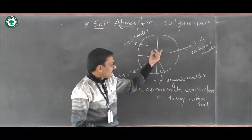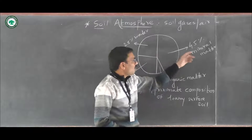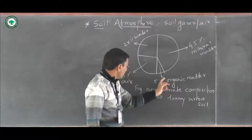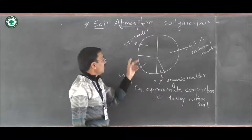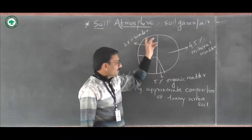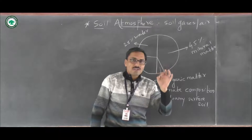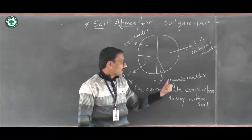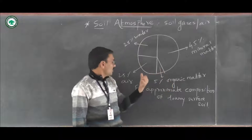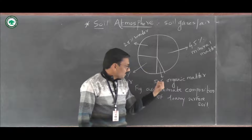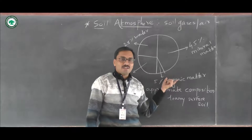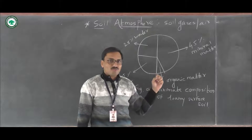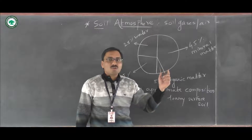This figure indicates that loamy surface soil consists of 45% mineral matter, only 5% organic matter, 25% air, and 25% water. So, the soil consists of a major proportion of mineral matter and a minor proportion of organic matter, along with air and water. That small amount of organic matter is one of the most important components of the soil, and it makes the soil fertile.